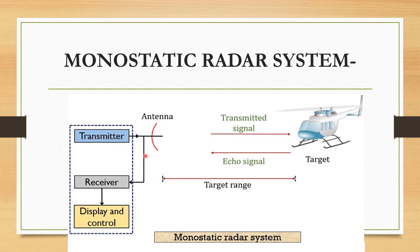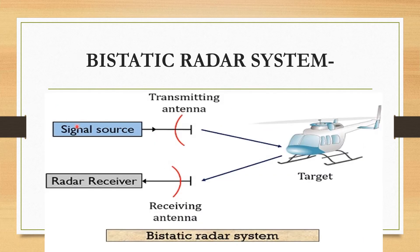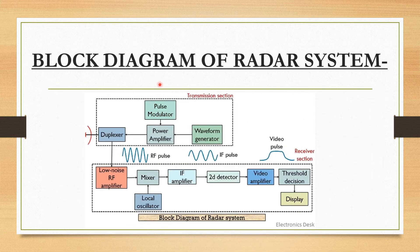In a monostatic radar system, there is only one antenna shared between transmitter and receiver. The target, transmitter signal, echo signal, and target range are all part of this setup. In a bistatic radar system, the transmitter and receiver have separate antennas. The block diagram of the radar system shows two major blocks: the transmitter section and the receiver section. The transmitter section is simpler compared to the receiver.